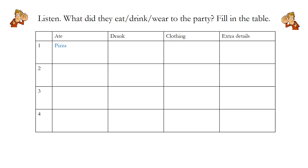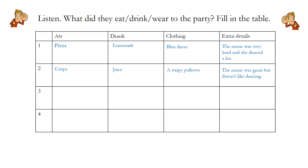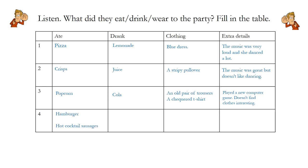Okay, I'm going to go through the answers now. Number one: ate pizza, drank lemonade, wore a blue dress. Extra details: the music was very loud and she danced a lot. Number two: ate crisps, drank juice, wore a stripy pullover. The music was great but she doesn't like dancing. Number three: ate popcorn, drank Cola, wore an old pair of trousers and a checkered T-shirt - ein karriertes T-Shirt. Extra details: he played a new computer game and he doesn't find clothes interesting. Finally, number four: they ate a hamburger and hot cocktail sausages, drank apple juice, wore black jeans and white shoes. Extra details: the food was tasty, the party was funny, but she was very tired on Sunday.